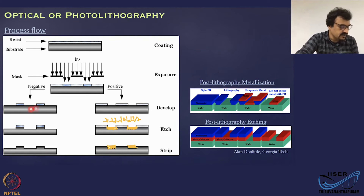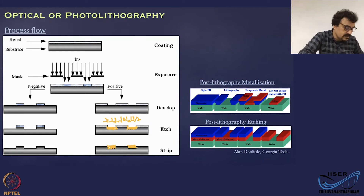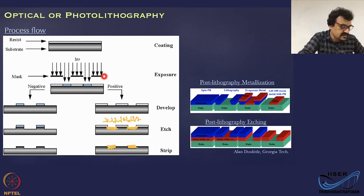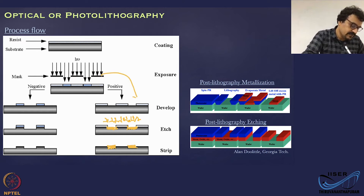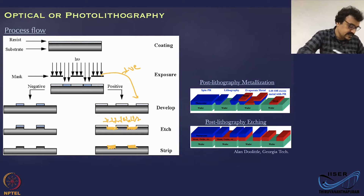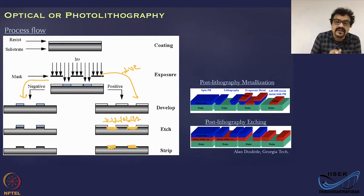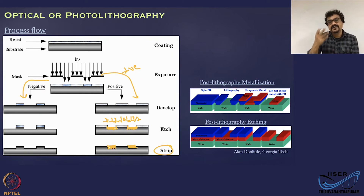The negative tone resist is just the negative of this process. Wherever the radiation hits, it undergoes hardening via polymerization, and you can remove the rest of the region using a solvent during development. You get the negative of whatever your original mask was — the inverse pattern is transferred onto the substrate. Similarly, you can add or remove material after development, then strip the resist to obtain the final transferred pattern.